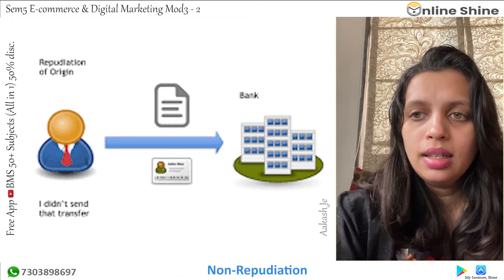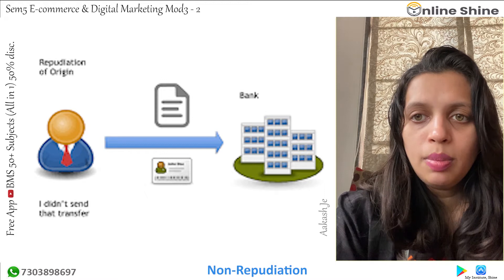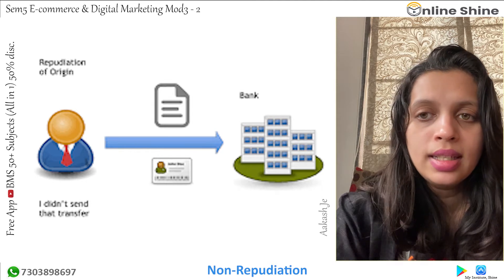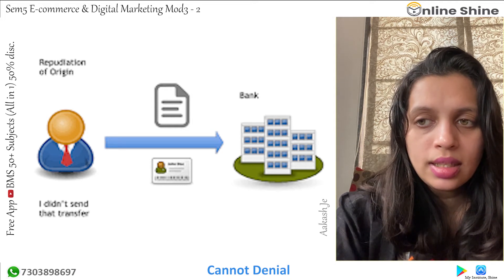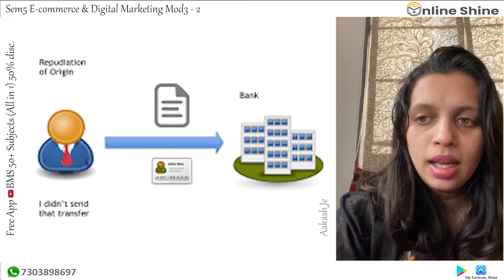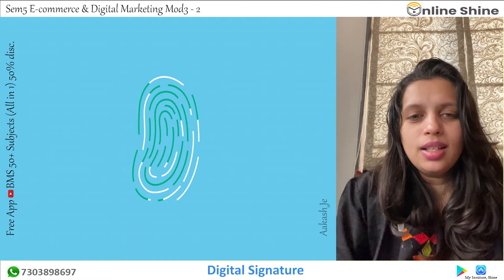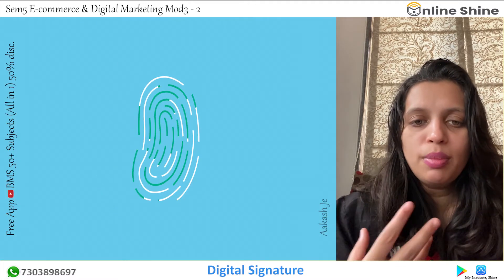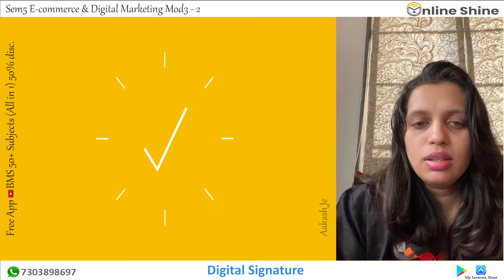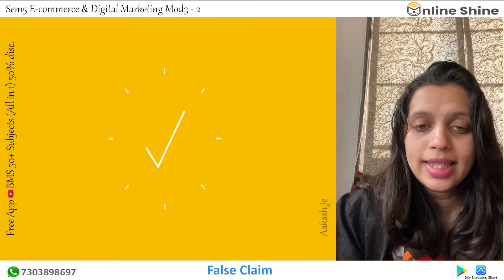Non-repudiation: when a party to a transaction denies the sending or receipt of an e-commerce message, the other party can be affected. Non-repudiation is the ability to ensure that parties to a transaction cannot deny communications sent by them. For this purpose, digital signatures may be used along with other measures. For example, there are various sites where you need a digital signature. A false claim by a receiver that a message has not been received is an example of this problem.